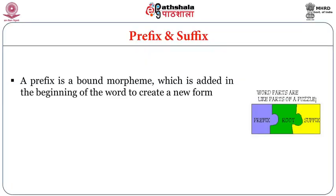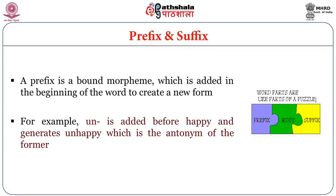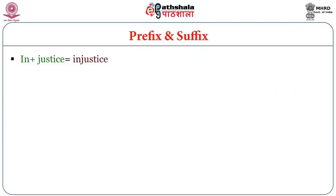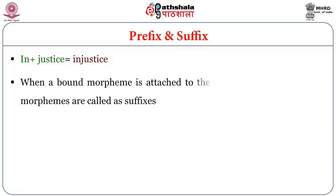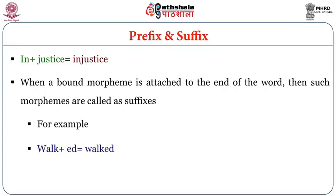A prefix is a bound morpheme added to the beginning of a word to create a new word or form. For example, 'UN' added before 'happy' generates 'unhappy', which is altogether different in meaning — the antonym of 'happy'. Similarly, 'IN' placed before 'justice' becomes 'injustice'. A suffix is a bound morpheme attached to the end of a word. For example, adding 'ED' to 'walk' gives 'walked', changing the tense.